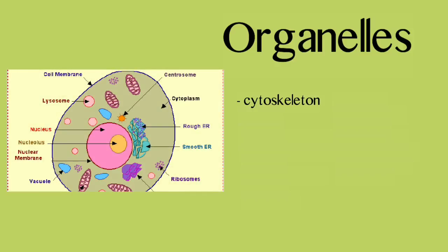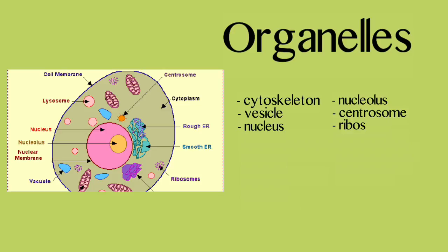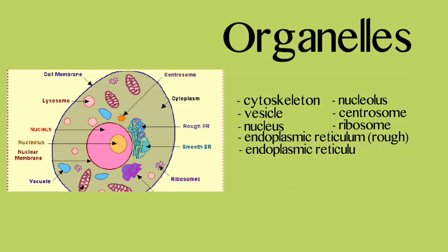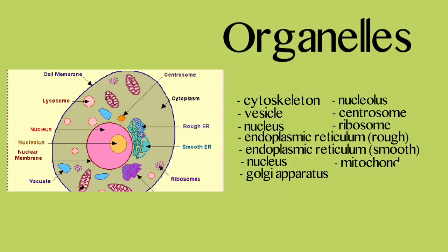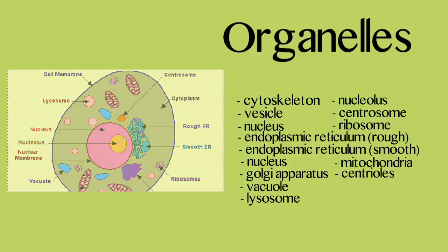Organelles that we are going to go over are the cytoskeleton, vesicle, nucleus, nucleolus, centrosomes, ribosomes, endoplasmic reticulum rough and smooth, the Golgi apparatus, the mitochondria, the vacuole, centrioles, and lysosomes.